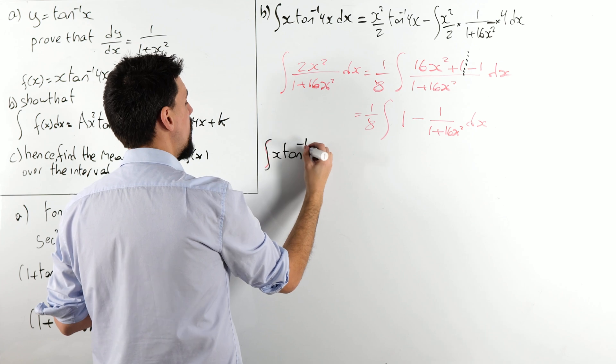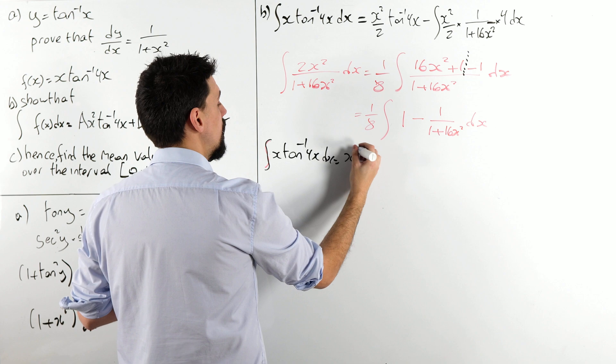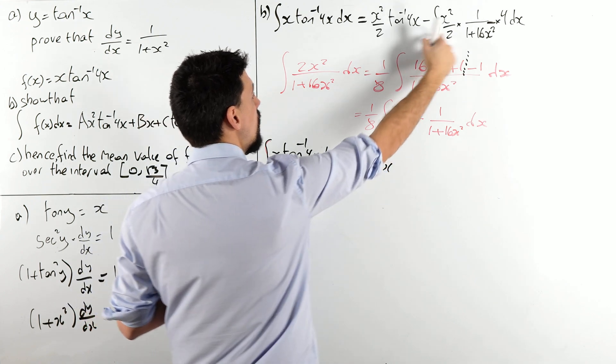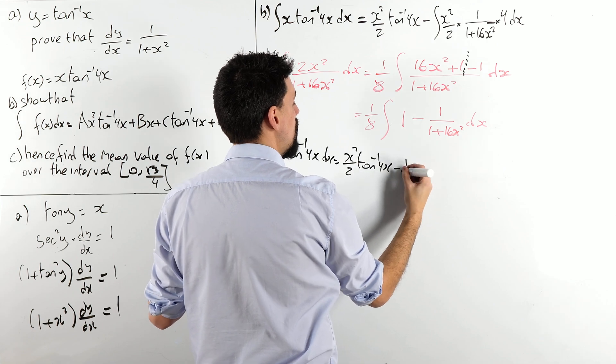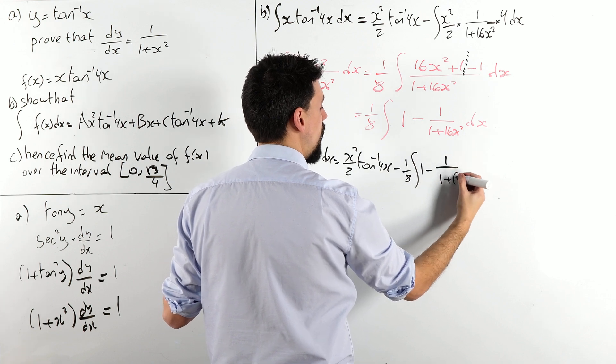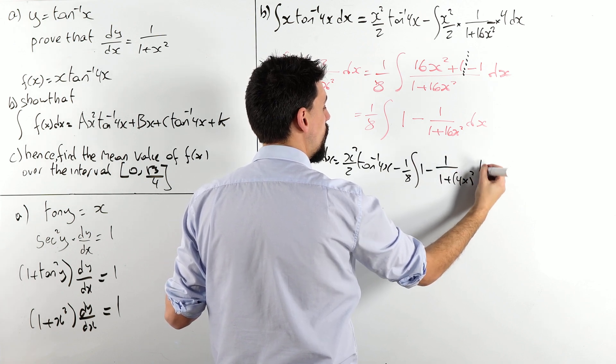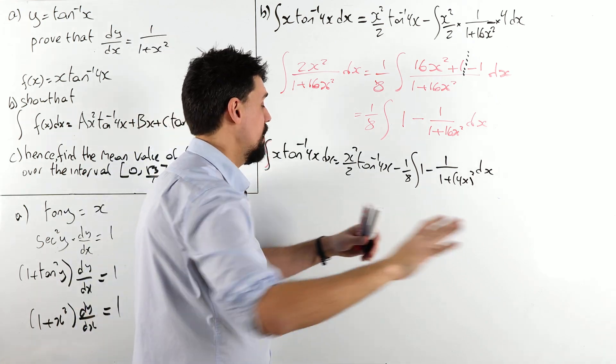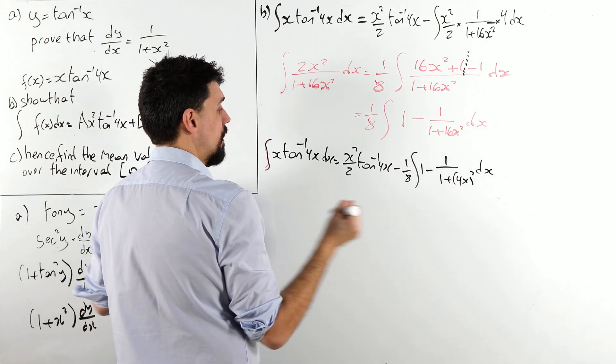So, tan minus 1 of 4x dx is x squared over 2 tan minus 1 of 4x minus this integral, minus 1 eighth the integral of 1 minus 1 over 1 plus 4x all squared dx. We're almost there, I promise you.